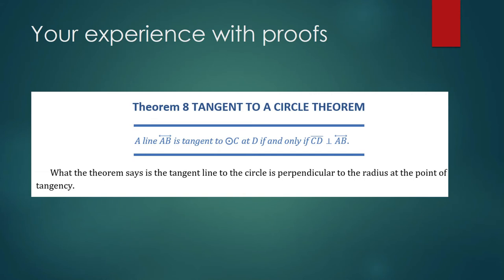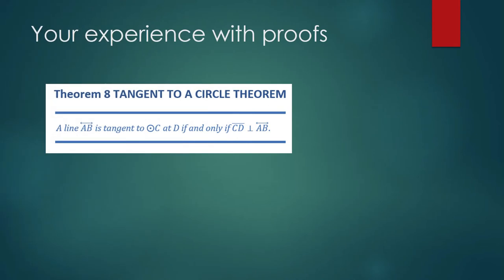Let us go back to your junior high school experience with geometry, because in junior high school that is where you did a lot of proving. Your teacher may have shown you Theorem 8: tangent to a circle theorem. A line AB is tangent to circle C, or circle with center C, at D, if and only if CD is perpendicular to AB.